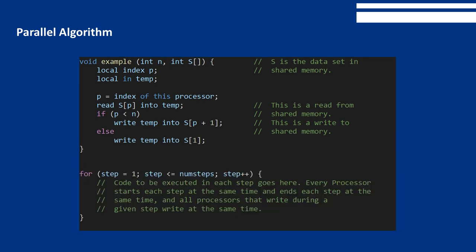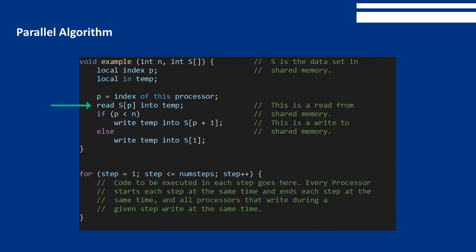Assuming that there is an array of integers S, indexed from 1 to n, in shared memory, and that n processors, indexed from 1 to n, are executing the algorithm in parallel — all of the values in the array S are read into n different local variables simultaneously. Effectively, every element in S is given the value of its predecessor, with wraparound.